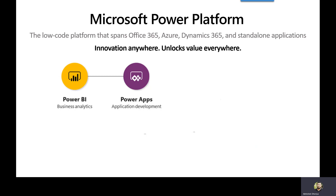You just need to apply your thought process in building your applications around your day-to-day business scenarios. The next product is Power Automate, with which you will be able to achieve process automation. This is essentially a robotic process automation tool — earlier it was known as Microsoft Flows. You will be able to automate most of your day-to-day repetitive tasks that you are doing manually, very easily. Once again, you do not need to be a hardcore professional developer to use this tool.